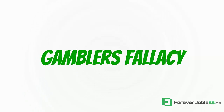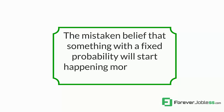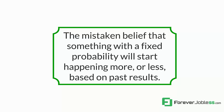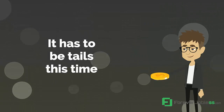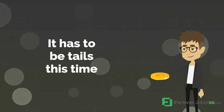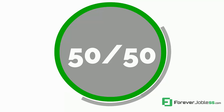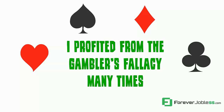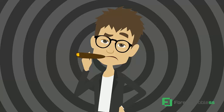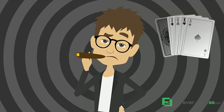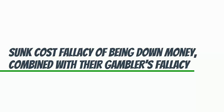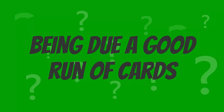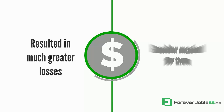They may as well be gambling, and this mindset is relevant to the gambler's fallacy — the mistaken belief that something with a fixed probability will start happening more or less based on past results. For example, a coin flips heads five times in a row. You'll see the gambler's fallacy at work when you hear someone say, 'Oh, it has to be tails this time.' The past results haven't changed the fact that it's still 50-50. When I played poker for a living, I profited from the gambler's fallacy many times. Players would often have trouble walking away from the table when they were losing, even if they were at a big disadvantage. Their mindset was, 'I just need a couple big hands to get back to even,' even though it was unlikely they'd make their money back since they weren't skilled enough to win in the game. Their sunk cost fallacy of being down money combined with their gambler's fallacy of being due a good run of cards kept them at the table, which often resulted in much greater losses.